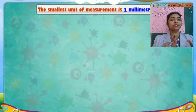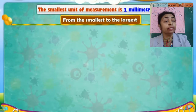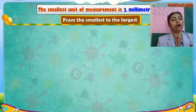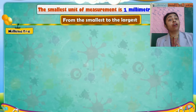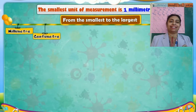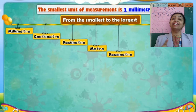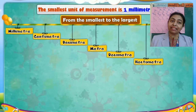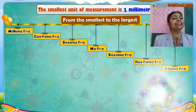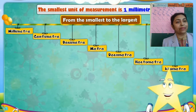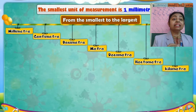Good morning children. Today we will learn about how we will convert from the smallest to the largest unit, and how we will do the conversion from smallest unit to the largest unit. The smallest unit is millimeter, after that centimeter, decimeter, meter, decameter, hectometer, and the largest is kilometer. These are the metric measure system units.